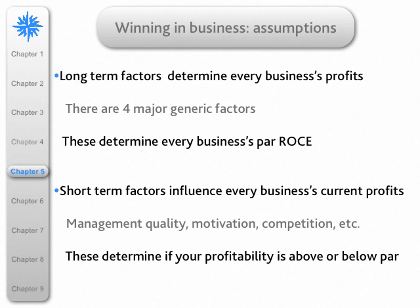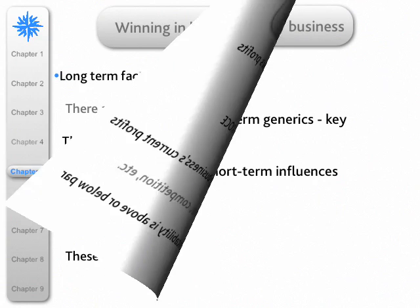The view of PIMS is the following: there are certain long-term factors that determine every business's profits. In fact, there are what could be called four major generic factors, and these determine every business's long-term power return on capital employed. But there are also short-term factors that influence a business's current profits — such as the particular quality of management, the degree of motivation, the degree of competition — and these determine whether profitability or return on capital employed is above or below power.